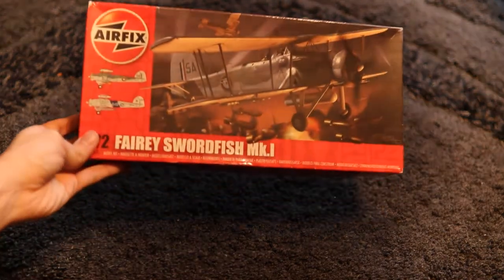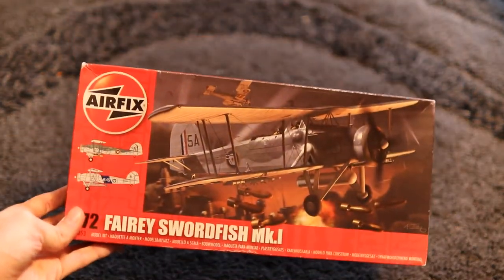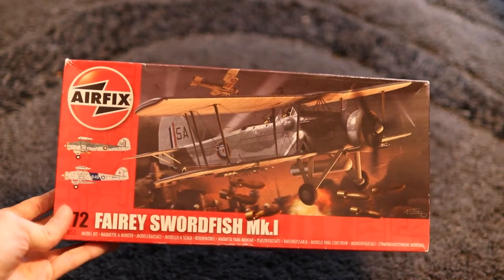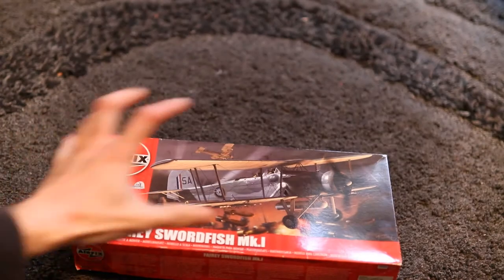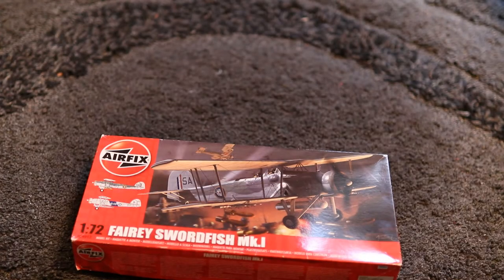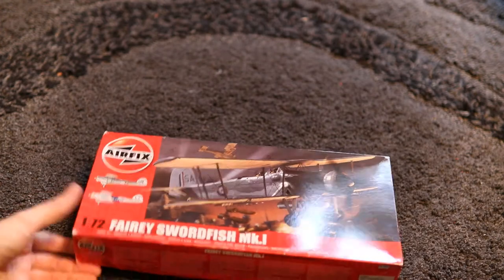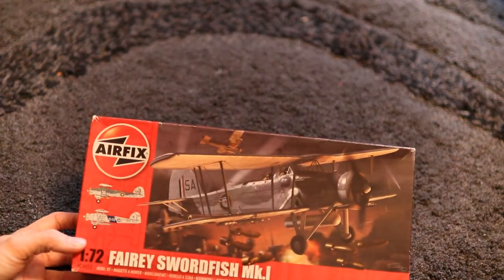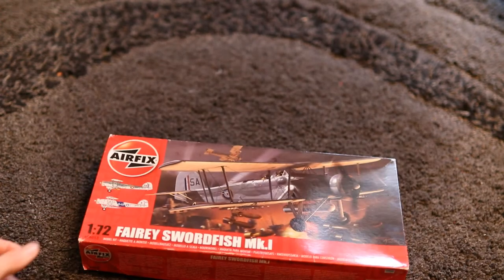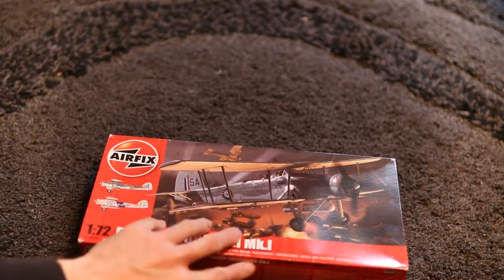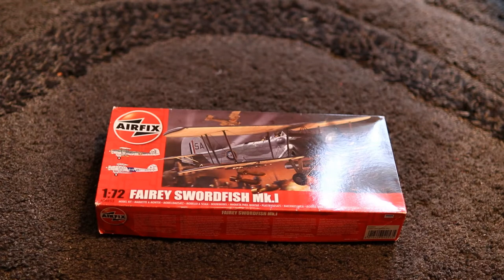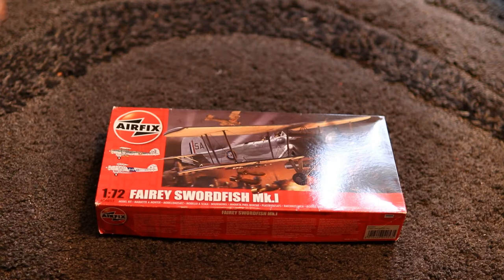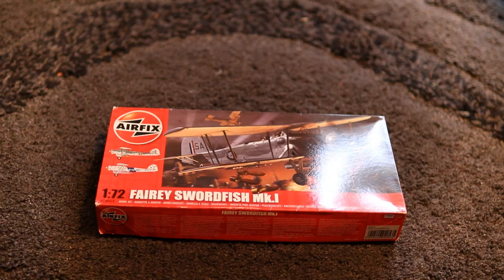Looking at the box then, you can see you've got some really interesting box art there, very impressive. Like I say, this is not going to be the one that is available to buy now. This one is kit number A04053, so you could probably pick these up from eBay or maybe even some model shops still have them in stock.